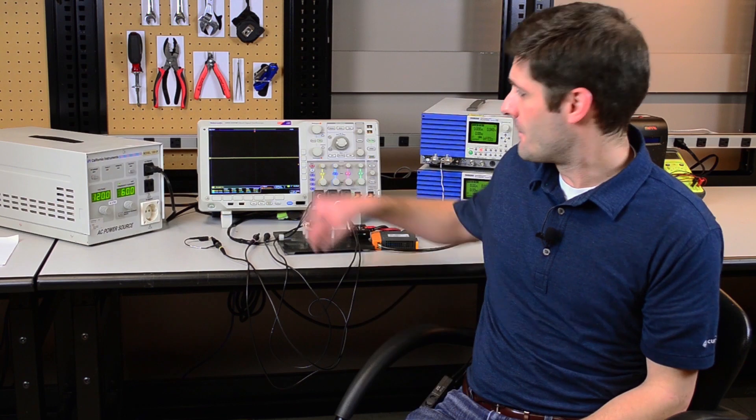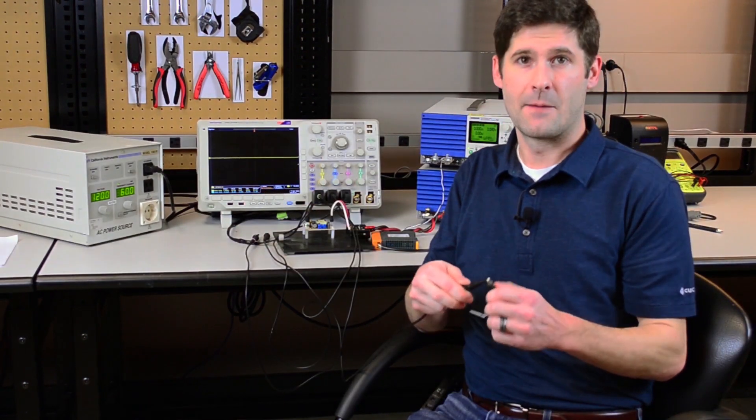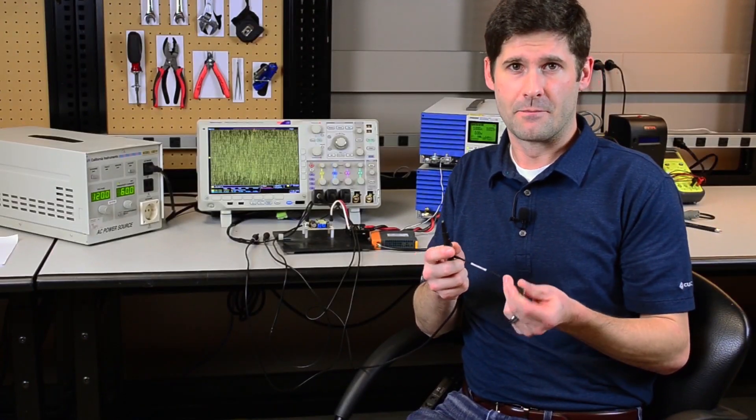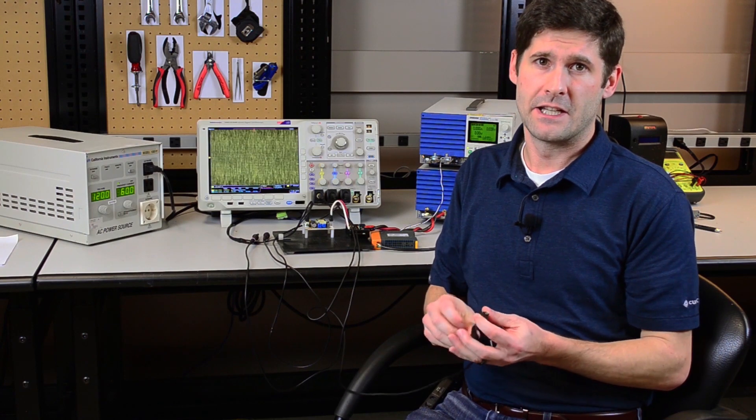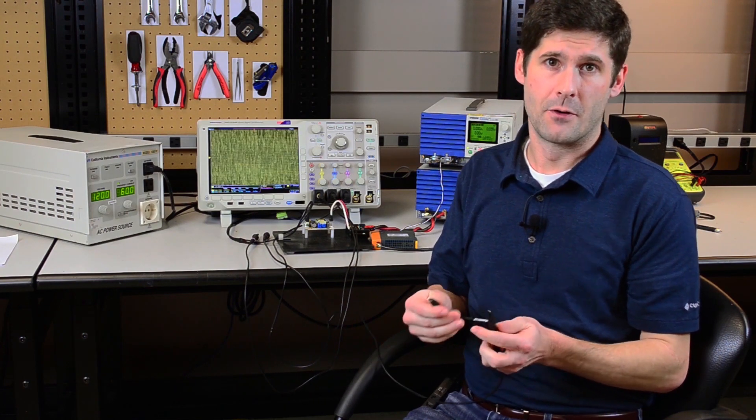So now let's take a look at an example of bad probing. Here we'll use the probe clips that came with the probe to make our connection. These are simple to use, but lead to a large loop area which will pick up noise.